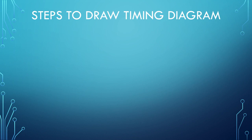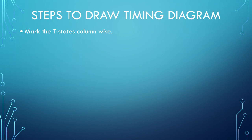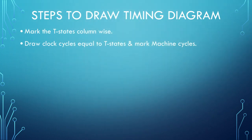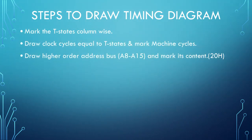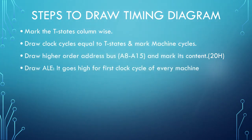Now we have all the requisite information to draw the timing diagram. Step by step: first, mark the number of T states column-wise. Then draw the clock cycles — one clock in each T state — and mark the machine cycles for the total clock cycles. Next, draw the higher order address bus and mark its content. Then draw the ALE signal (address latch enable); this signal goes high for the first clock cycle of every machine cycle and low for the remaining clocks.